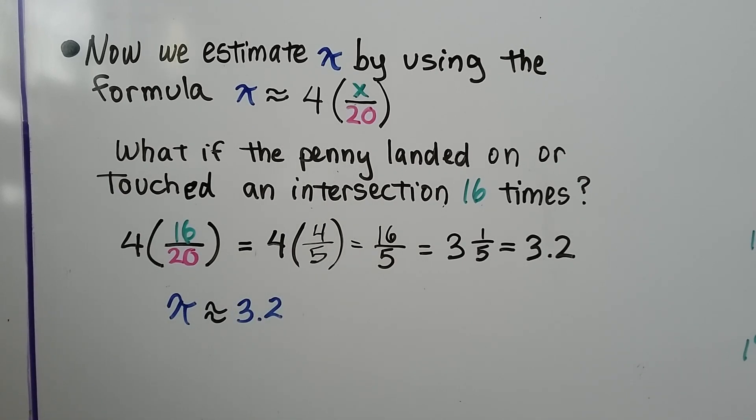So if the penny landed on or touched an intersection sixteen times out of the twenty, we would do four times the quotient of sixteen and twenty. That would be four times four fifths, which would be sixteen fifths, which is three point two. So we'd be saying pi is approximately three point two. And that's pretty close.